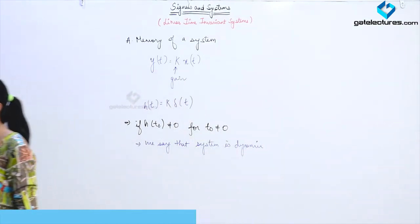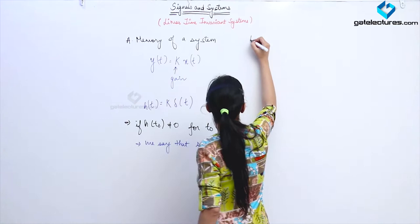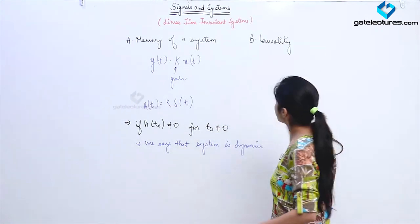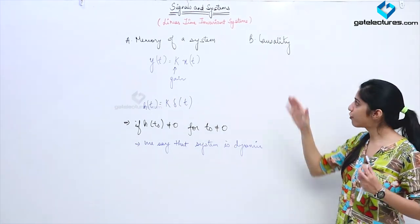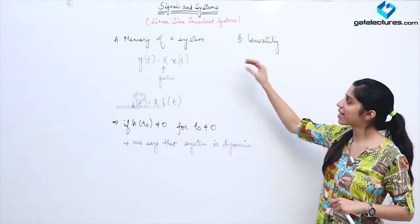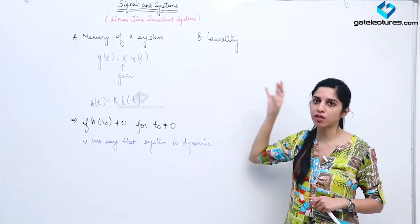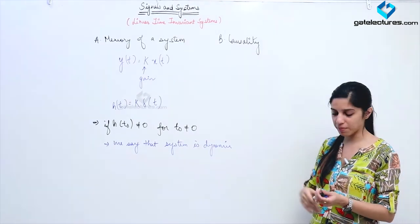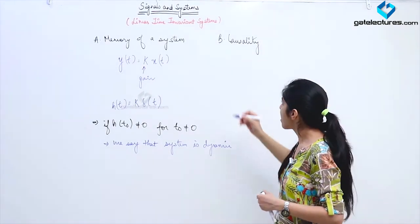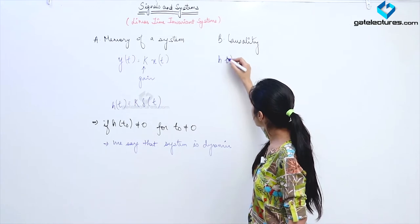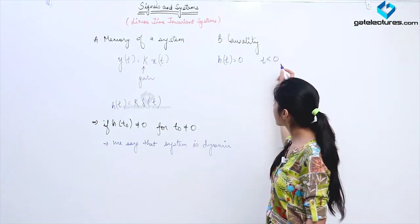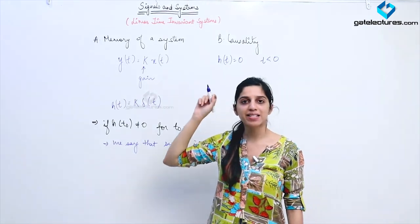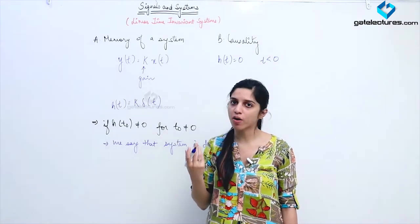Now we look at causality of the system. What causality means is that before the event — before the excitation actually occurs — the system must not respond, it must not give an output. So if H(T) = 0 for all time instances less than zero, that is H(T) = 0 for T < 0, we can say that the system is a causal system.